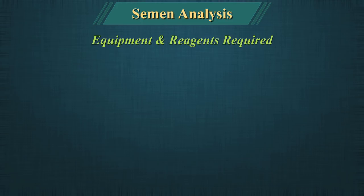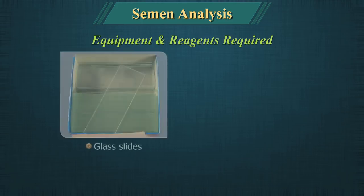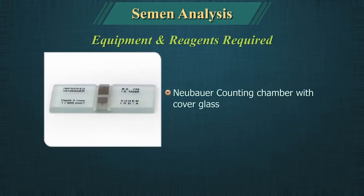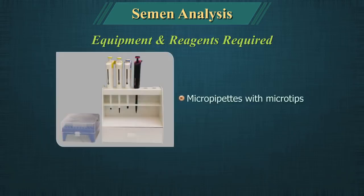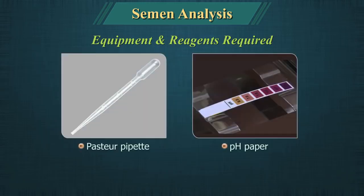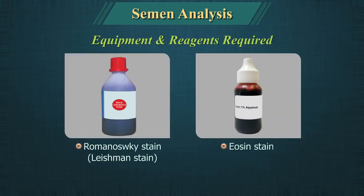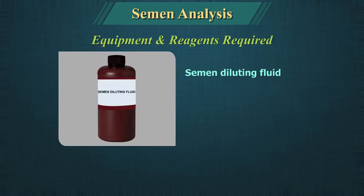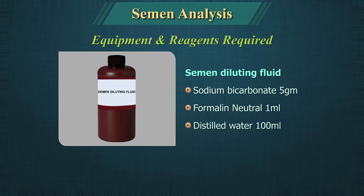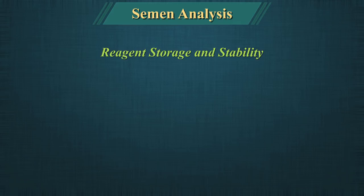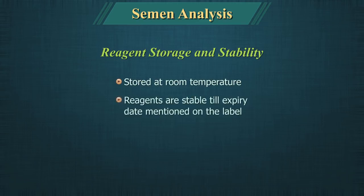Equipment and reagents required for semen analysis include: glass slides, cover glass, Neubar's counting chamber with cover glass, micro pipettes with micro tips, Pasteur's pipette, pH paper, Leishman stain, eosin stain, semen diluting fluid containing sodium bicarbonate, formalin neutral, and distilled water, as well as a microscope. Reagents are to be stored at room temperature and are stable till the expiry date mentioned on the label.